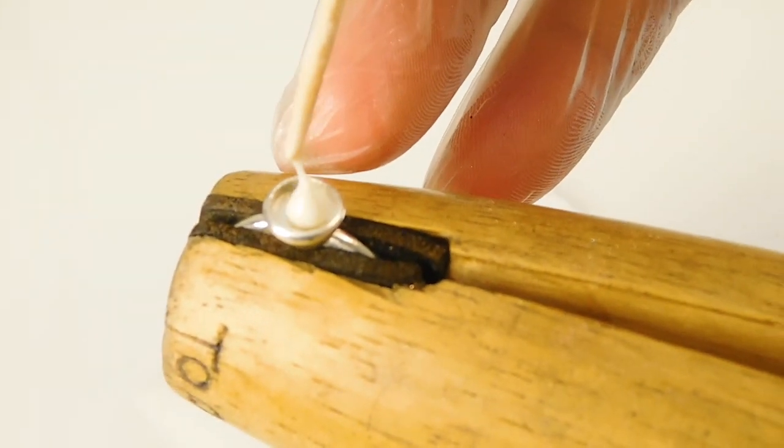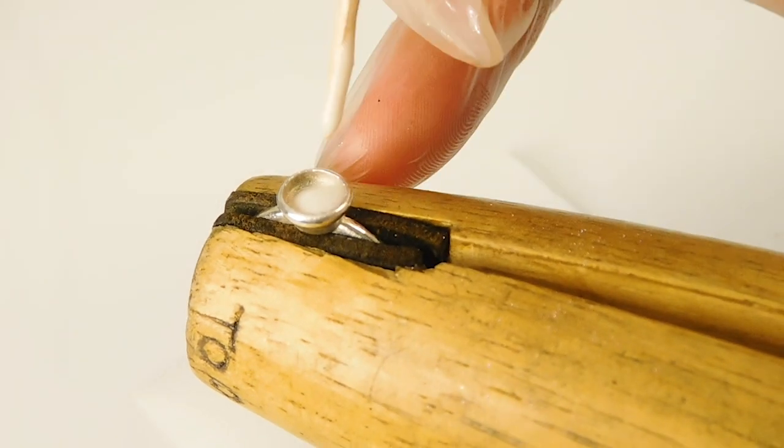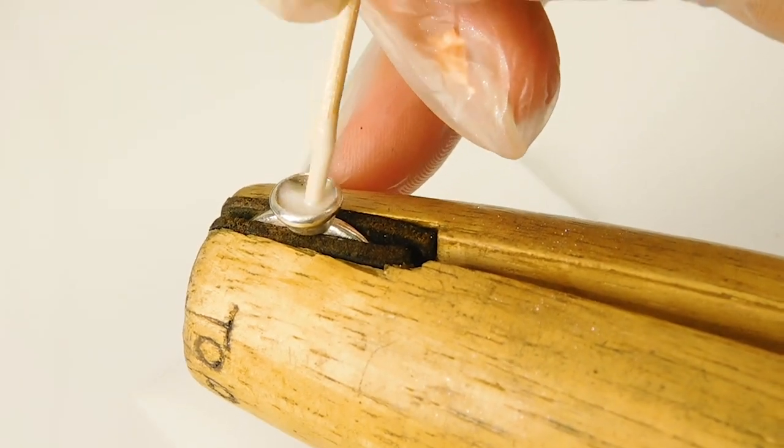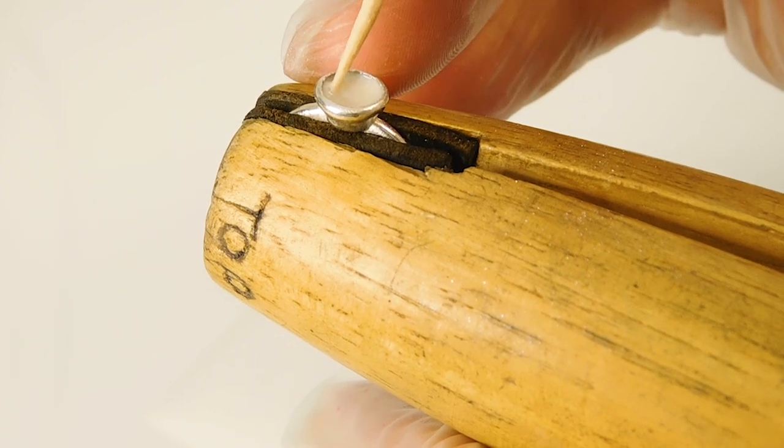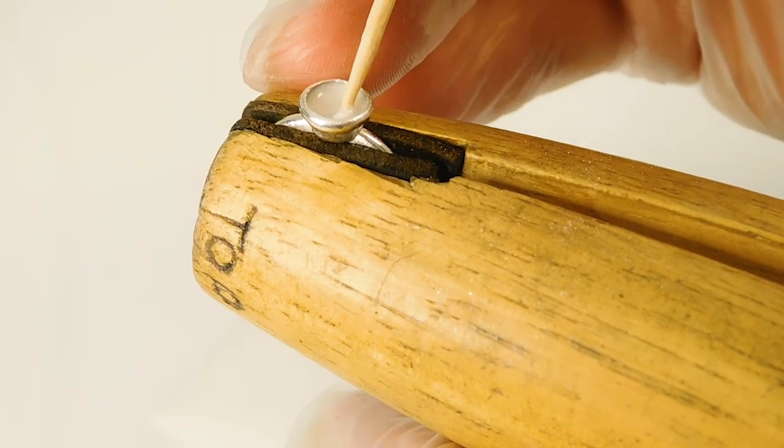Mix the powder and resin well with a cocktail stick and put a little drop in the ring so it's just about half full. Cure in the UV lamp. I've gone into more detail about this in the blog. Please give it a read if you have time.